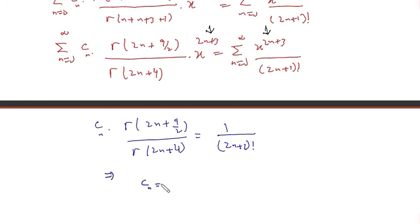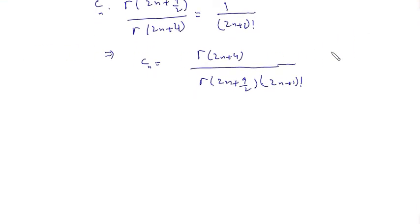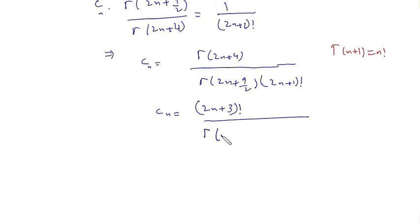Shifting the gamma factors to the right-hand side, c_n equals gamma(2n+4) over gamma(2n plus 9/2) times (2n+1)!. Since we know that gamma(n+1) equals n! for non-negative integers, gamma(2n+4) becomes (2n+3)!. So c_n equals (2n+3)! over gamma(2n plus 9/2) times (2n+1)!.